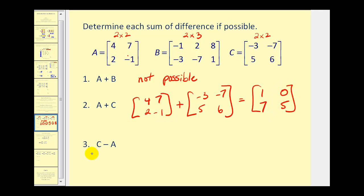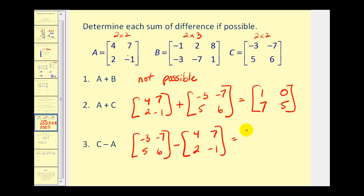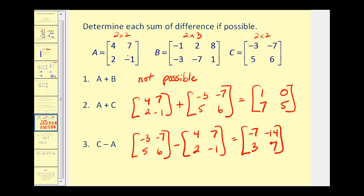For number three, we want matrix C minus matrix A. Again, they have the same dimensions. When we're subtracting, we do have to be careful of our signs. For row one, column one, we'll have negative three minus positive four — that's negative seven. Row one, column two: negative seven minus seven is negative 14. For row two, column one: five minus two is three. And row two, column two: six minus negative one becomes six plus one, so we have seven.